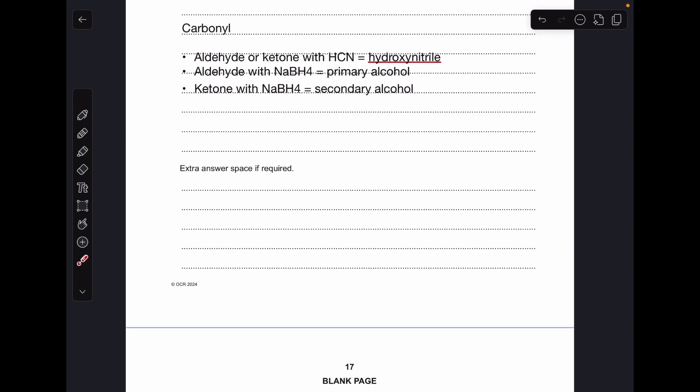And then for the carbonyl reaction, the choices are aldehyde or ketone with hydrogen cyanide. That's going to give us a hydroxynitrile. You could have an aldehyde with NaBH4, it's going to give you a primary alcohol, or you could have a ketone with NaBH4, and that's going to give you a secondary alcohol.